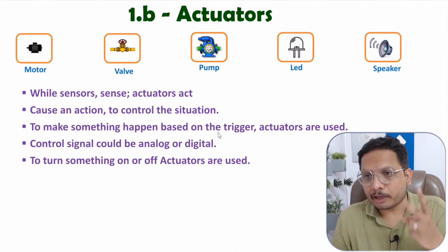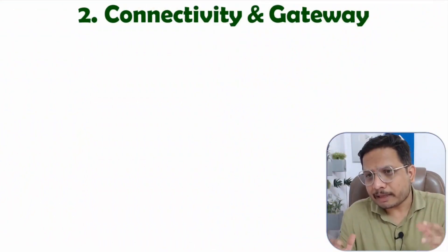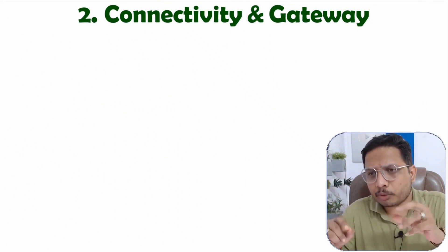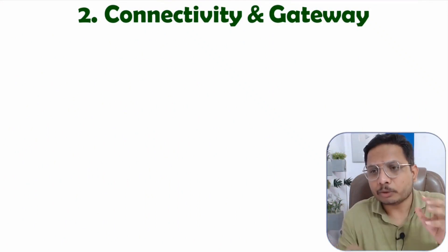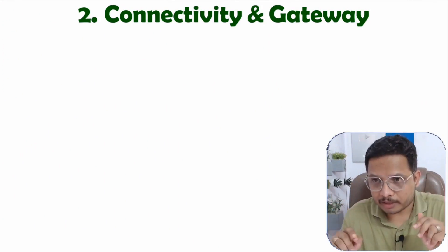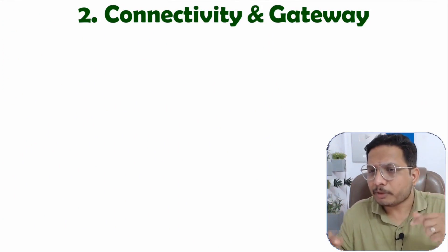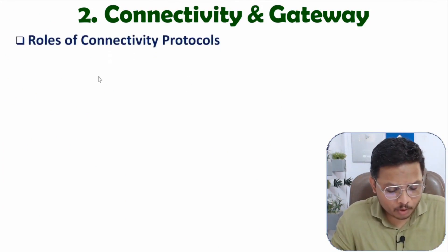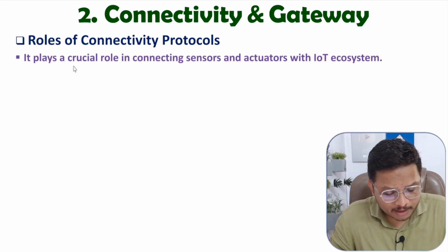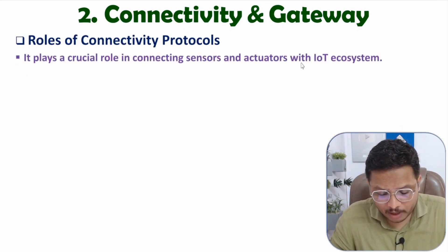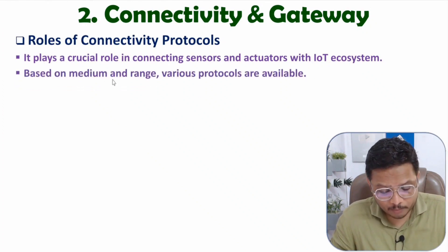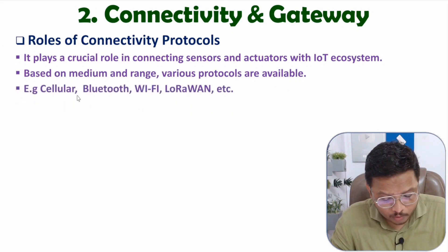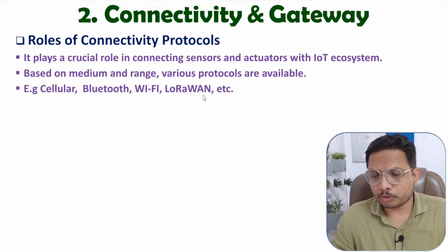The second IoT component is connectivity and gateway. Connectivity and gateway protocols ensure a smooth interconnection between sensors, actuators, and the IoT cloud. They play a crucial role in connecting sensors and actuators to the IoT ecosystem. Various protocols are available based on medium and range — for example, cellular protocols, Bluetooth, Wi-Fi, and LoRaWAN protocols.